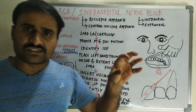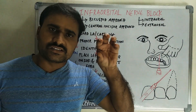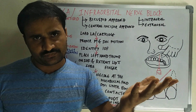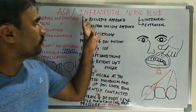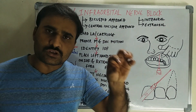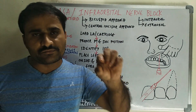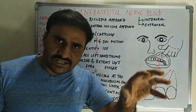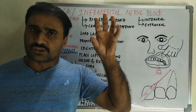Indications: you can use this block when there is a procedure on more than two maxillary teeth up to the premolars. Also indicated when there is a contraindication to supraperiosteal injection, such as periapical abscess, in which case you cannot go for infiltration.